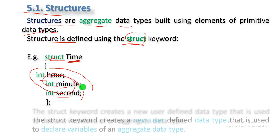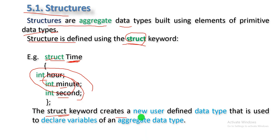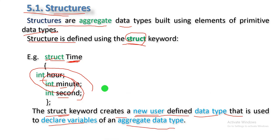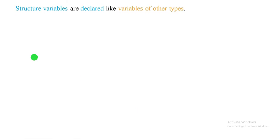The struct keyword creates a user-defined data type, which is not a predefined or built-in data type. The struct keyword creates a new user-defined data type that is used to declare the variable of an aggregate data type. The structure can be used as a homogeneous data type or as a heterogeneous data type.